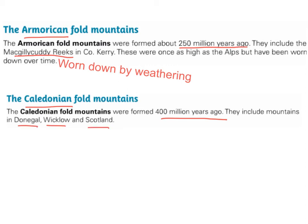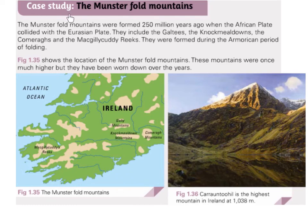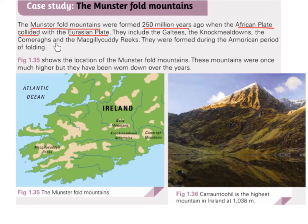Now we're going to look at our fold mountain case study: the Munster fold mountains. The Munster fold mountains were formed 250 million years ago when the African plate collided with the Eurasian plate. They include the Galtys, the Knockmealdowns, the Comeraghs, and the McGillicuddy Reeks. They were formed during the Armorican period of folding.